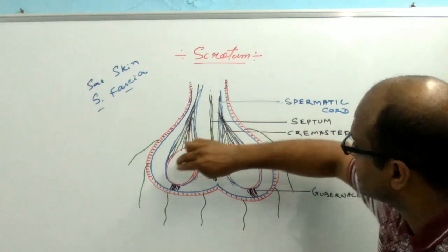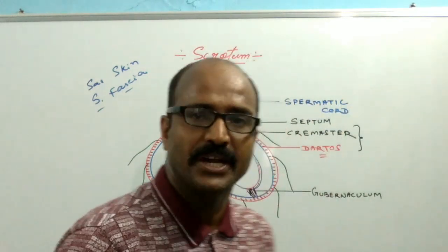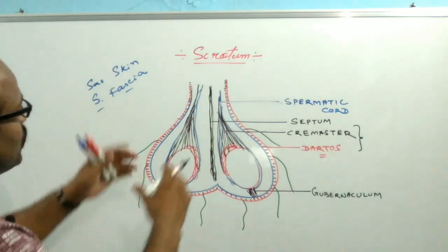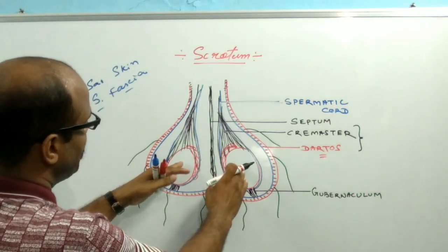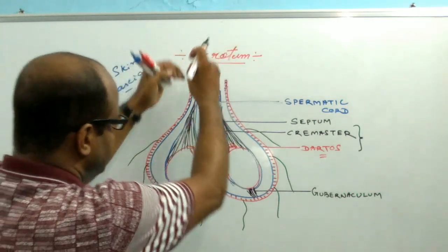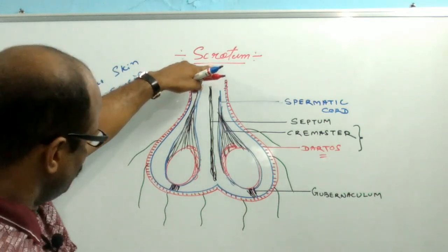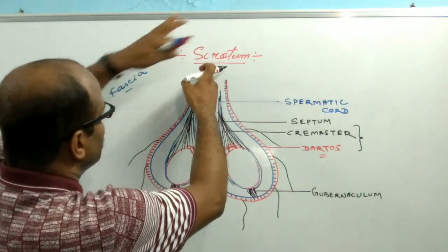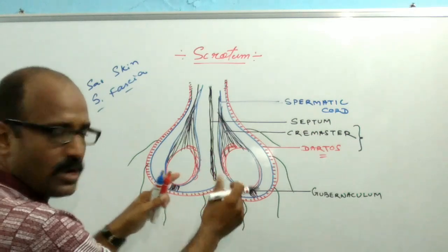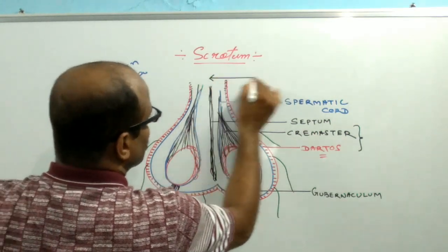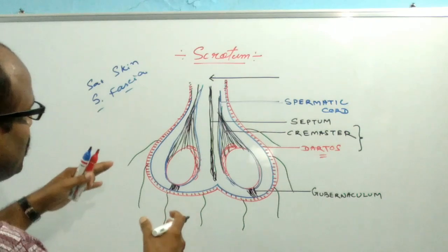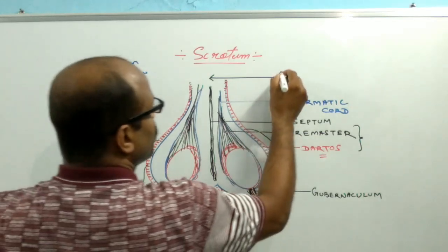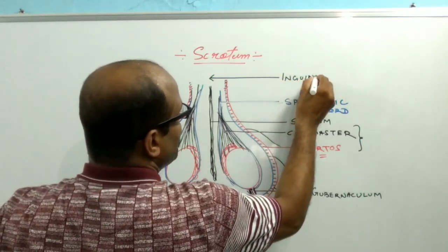The development of the testes takes place inside the abdominal cavity during the developmental period. After complete development, the testes descend into the scrotum. So there is a connection between the abdominal cavity and the scrotum. This canal which communicates the scrotum and the abdominal cavity is known as the inguinal canal.